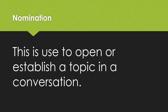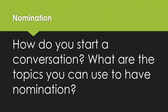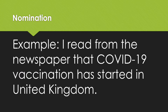The first strategy is nomination. This is used to open or establish a topic in a conversation. When you start a conversation, you have a topic for you and your friend to talk about. For example, you can use news or an announcement such as: 'I read from the newspaper that COVID-19 vaccination has started in the United Kingdom.' News or information are good topics to start a conversation.